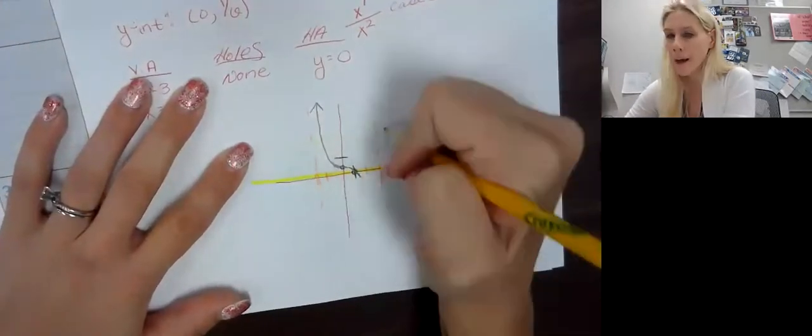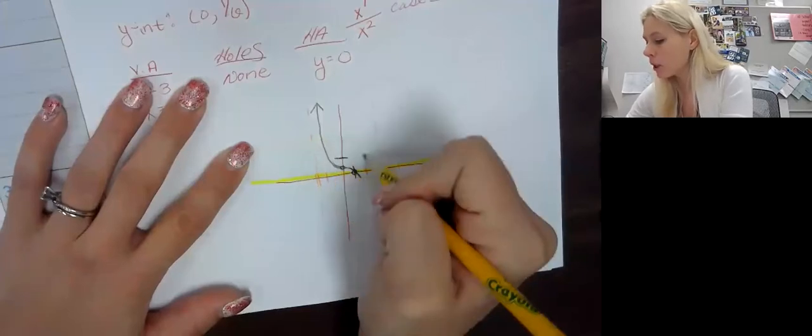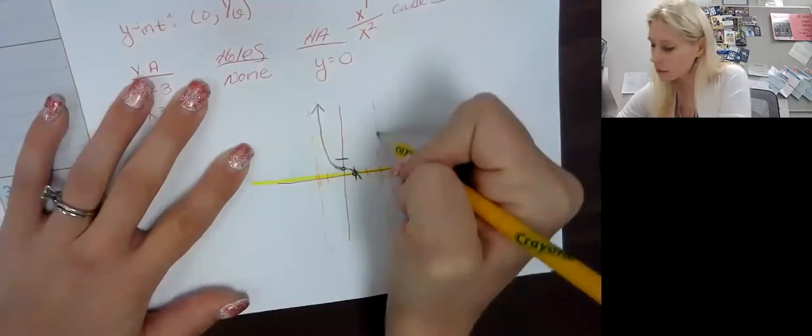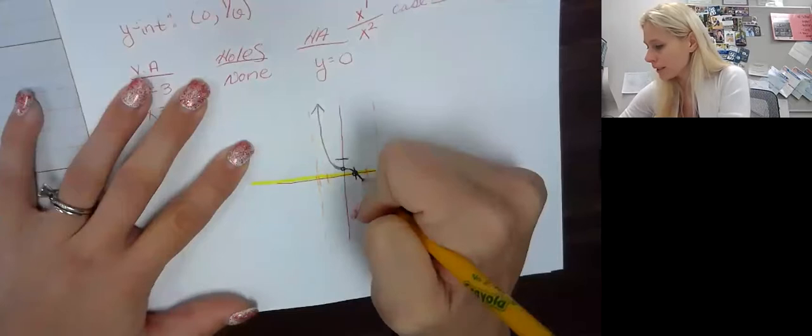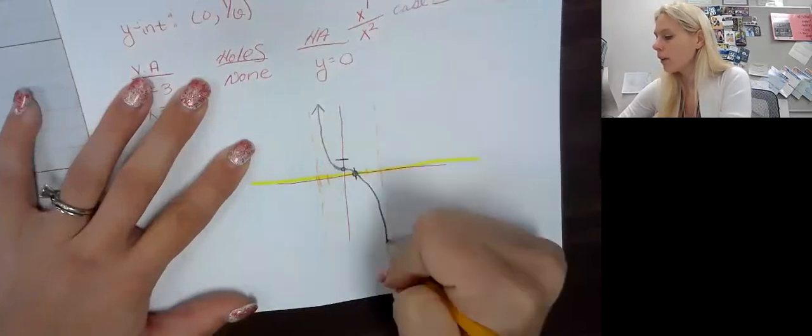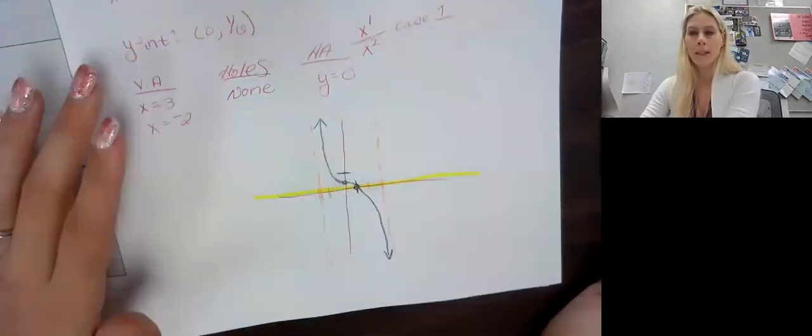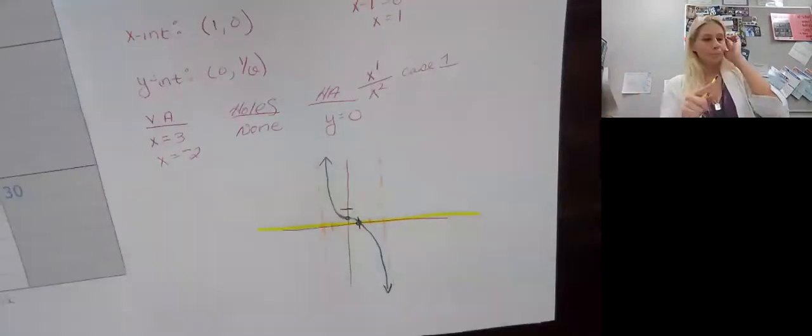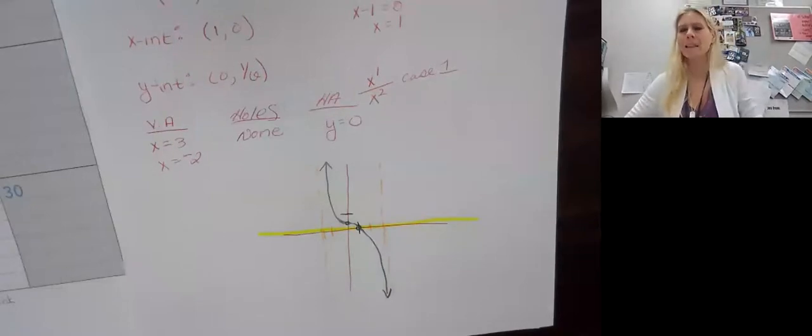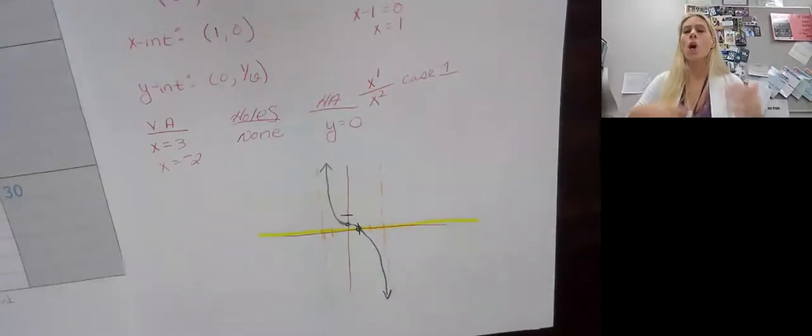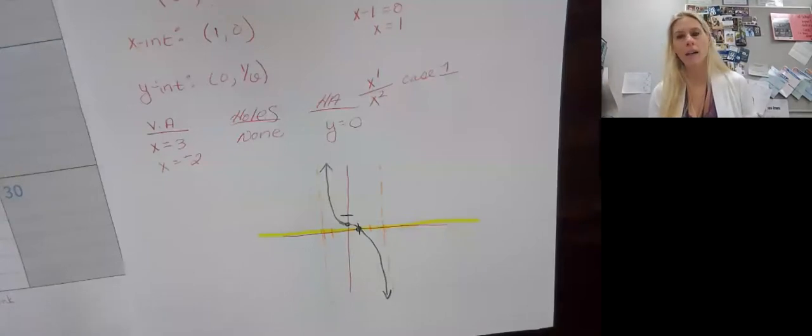So I know this one goes up, and these asymptotes here means that it gets really, really close, so it's going to keep going up. And this one, again, it wouldn't come back up because one is not touching, nor is there another x-intercept here. So I can assume that it's going down. I think it gets really, really close to that asymptote.